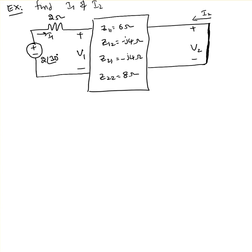In this given circuit, we are asked to find I1 and I2. Instead of circuit elements, this circuit gives us Z parameters.